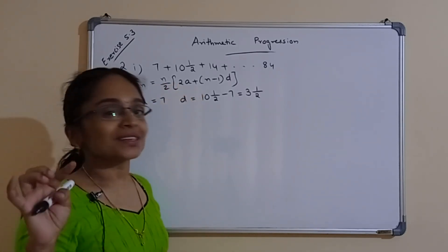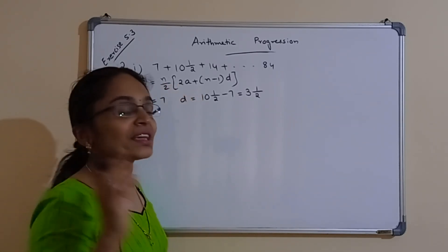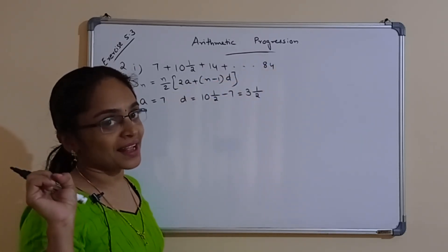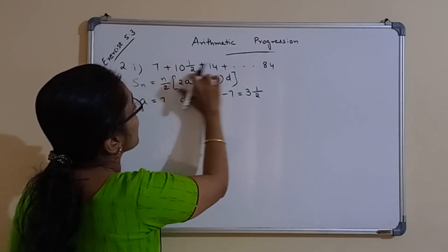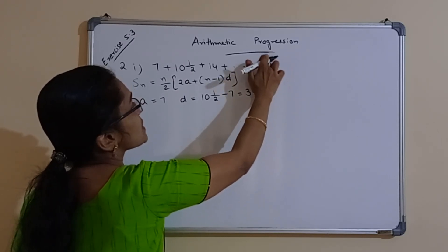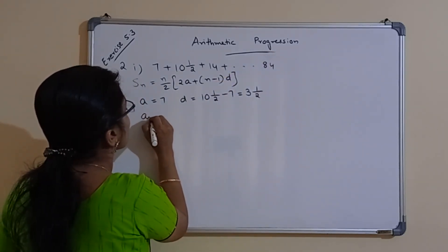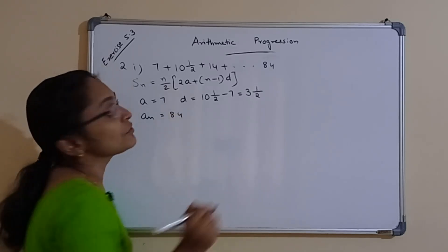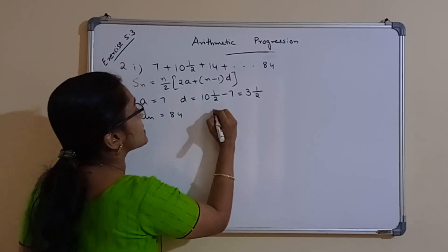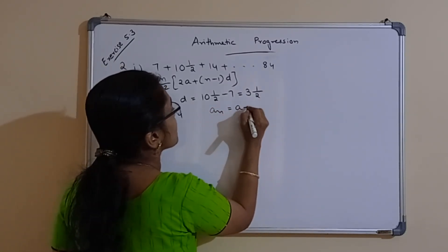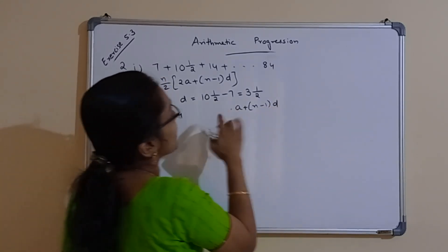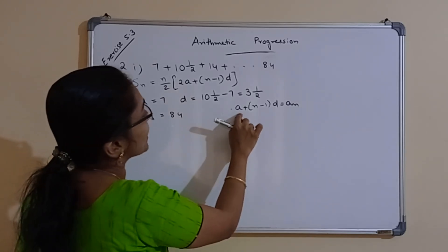Now we don't know what n is. To find n, we know that An is 84. We can substitute An as 84 to find n — that is, how many terms there are. So An = 84 and we know the formula An = A + (n−1)×D. Now substitute for A and D here.